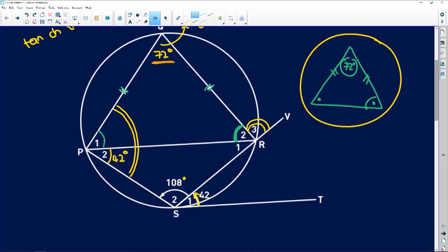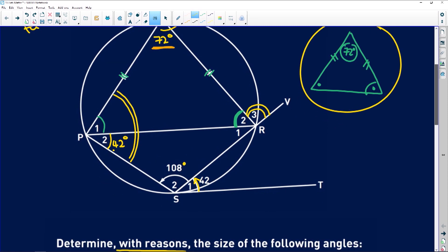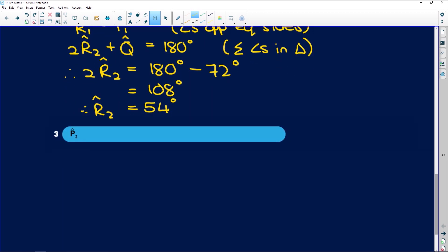Then it says find angle P2. So, let's have a look here. Well, angle P2, how did we know that this was 42 degrees? Because of the tan chord theorem. Okay. So, P2 is equal to angle S1 because of tan chord theorem. And therefore, P2 is equal to 42 degrees because S1 was given to us.